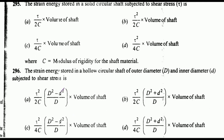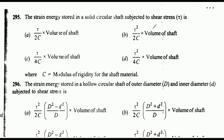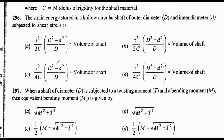The strain energy stored in a solid circular shaft subjected to shear stress τ — where C equals modulus of rigidity — the correct answer is option D: τ²/(4C) × volume of shaft. The strain energy stored in a hollow circular shaft of outer diameter D and inner diameter d subjected to shear stress is option D: τ²(D² + d²) / (4C × D) × volume of shaft.